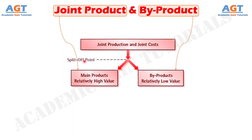Joint products are the products which are produced simultaneously with the same raw material and process, and require further processing to become a finished product after they get separated. On the other hand, the by-product is nothing but the subsidiary product which emerges out in the course of manufacturing of the main product.